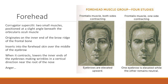The corrugator supracilii are two small muscles positioned at a slight angle beneath the orbicularis oculi. They originate on the inner end of the brow ridge of the frontal bone and insert into the forehead skin over the middle of the eyebrow. When they contract, they lower the inner ends of the eyebrows, making wrinkles in a vertical direction near the root of the nose. Contracting just one side of the frontalis gives a suspicious or 'oh really' type of look.